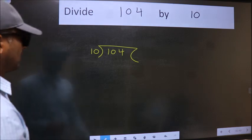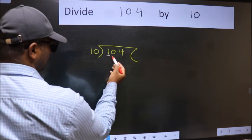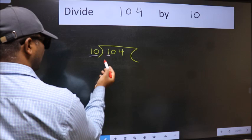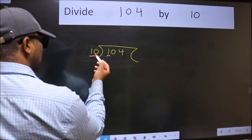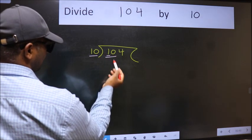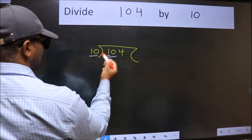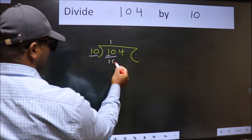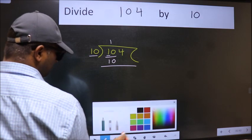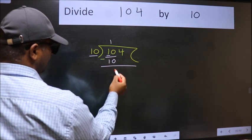Next. Here we have 1 and here 10. 1 is smaller than 10. So, take two numbers: 10. When do we get 10 in 10's table? 10 once is 10. Now, we should subtract. We get 0.